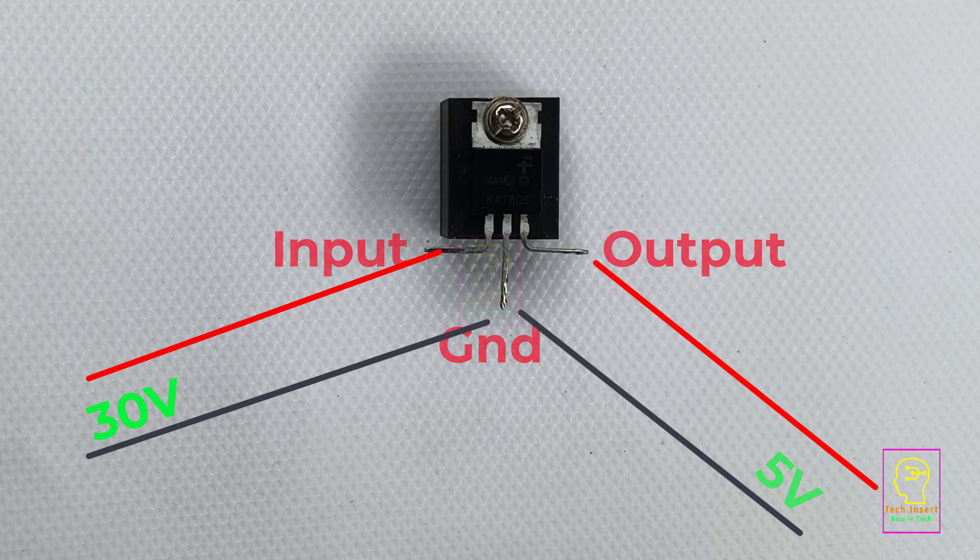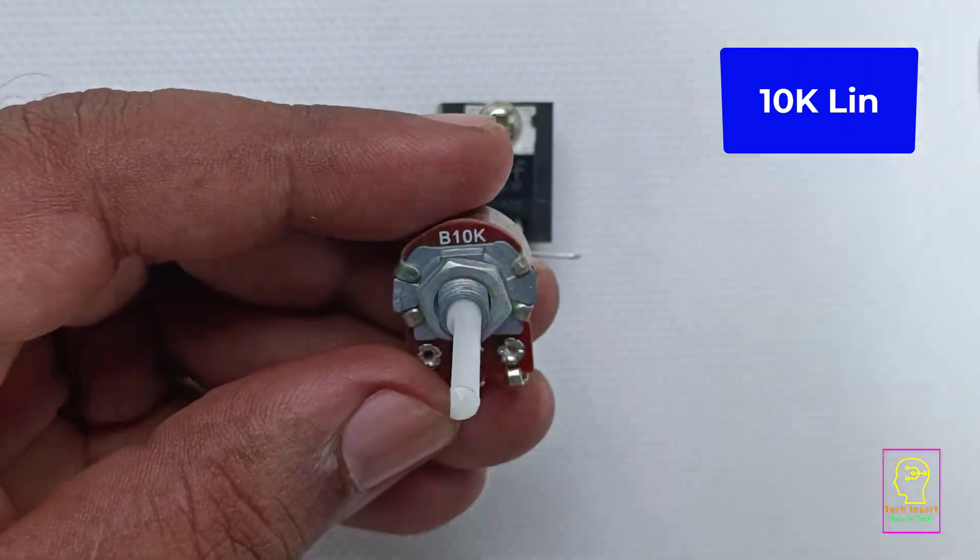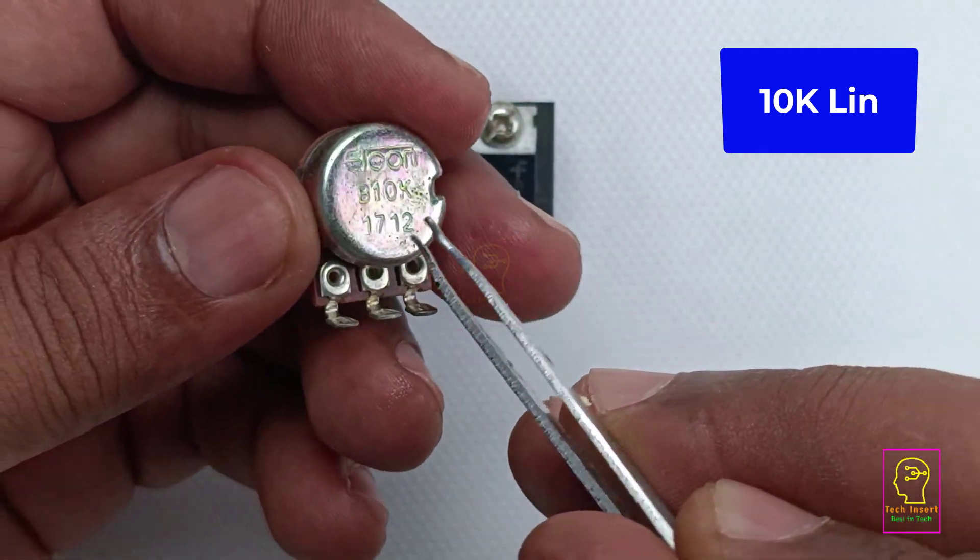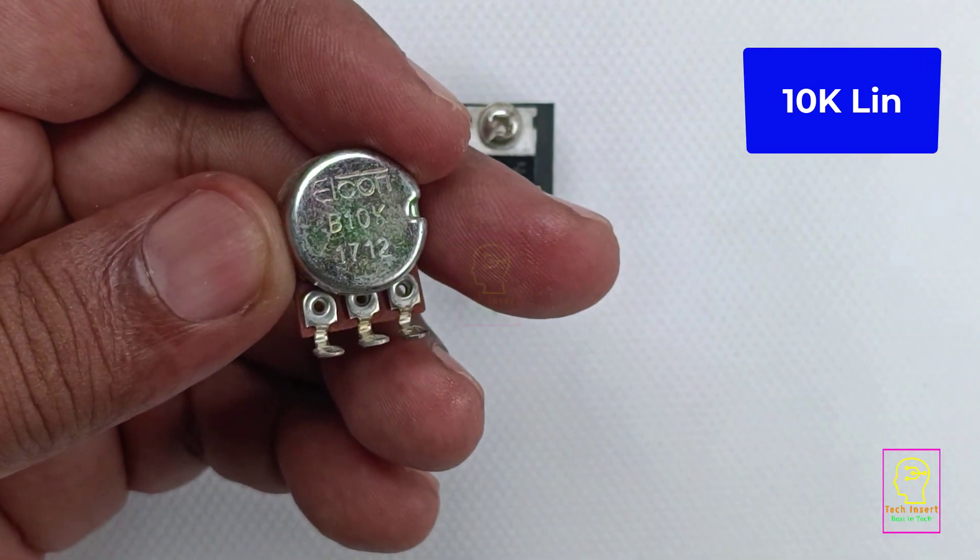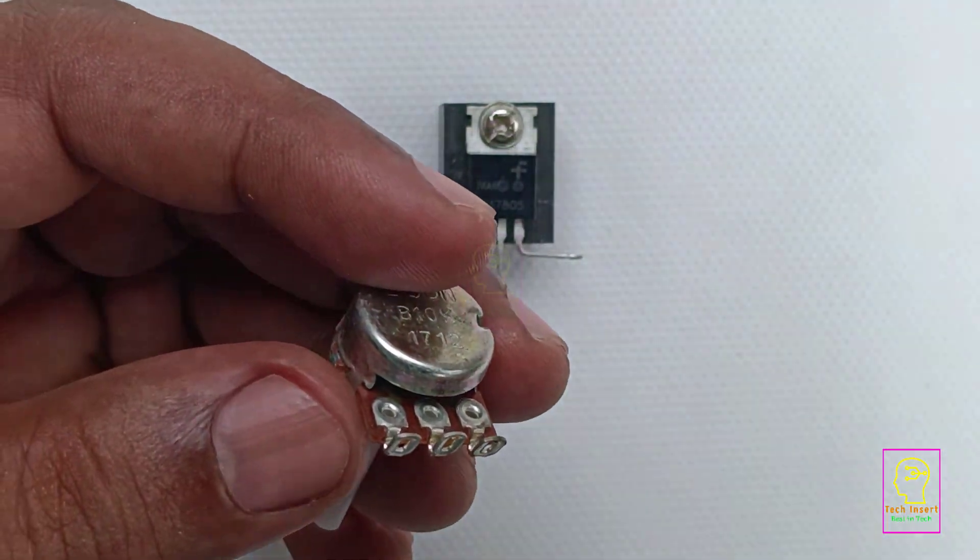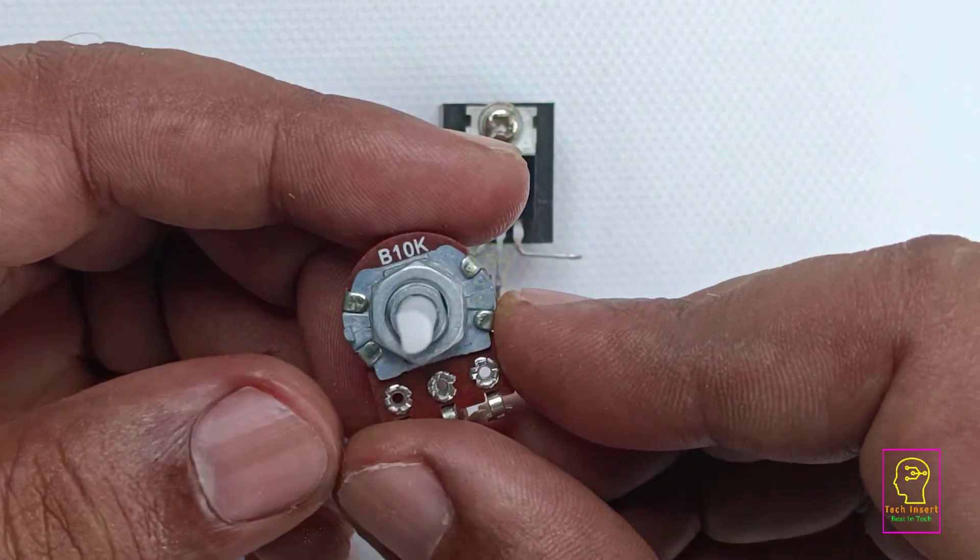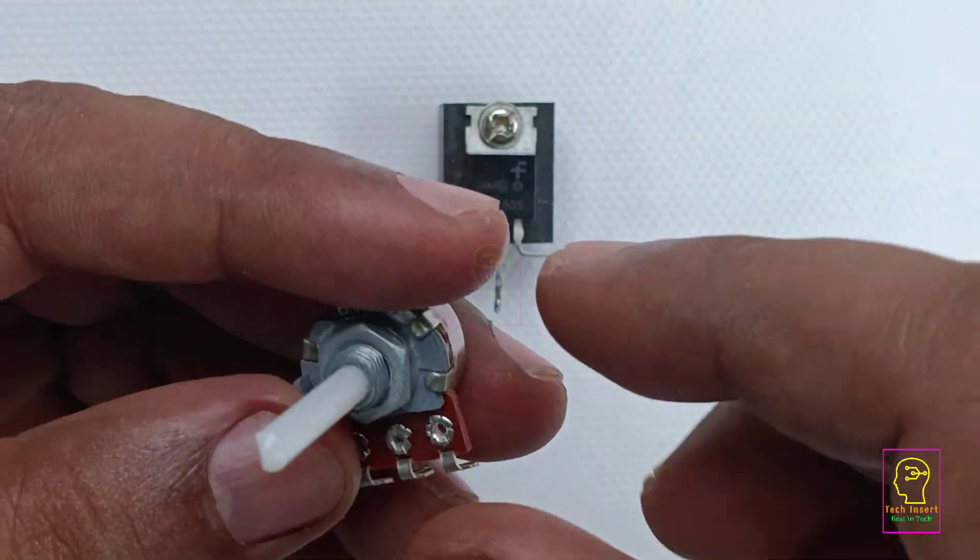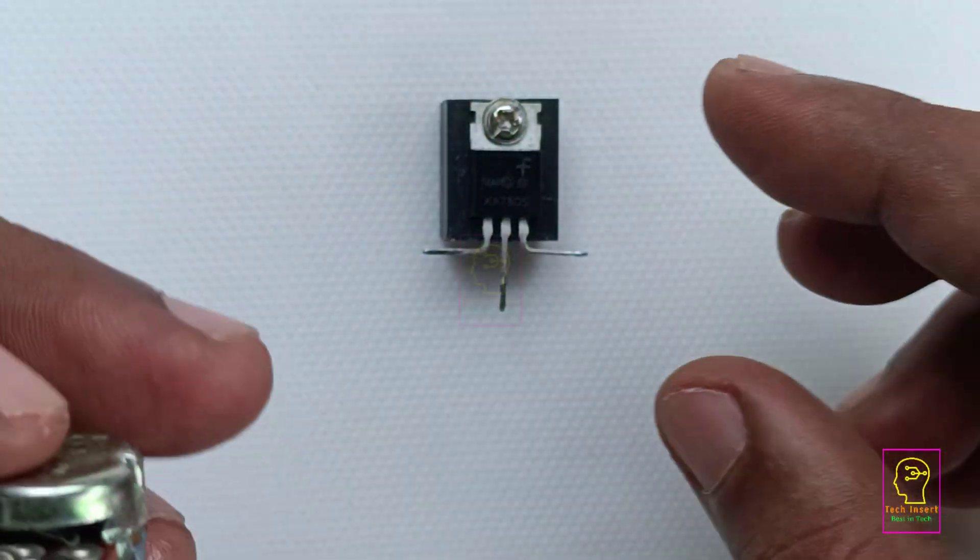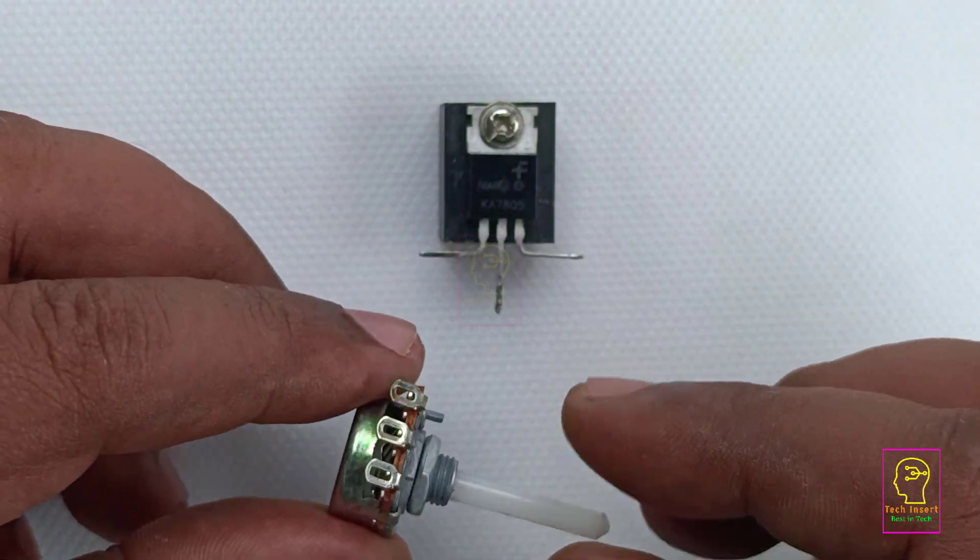This is a 10k linear variable resistance. You can see that it is written as B10K. B means linear control. One more thing is called logarithmic control. Logarithmic control is used for controlling the volume, and linear control B type controls are used in tone controls like bass and treble controls. We don't need any other components other than this variable resistor.